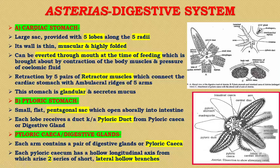The first part of the stomach is the cardiac stomach. It is a large sac — a large chamber provided with five lobes along the five radii. The wall is thin, muscular, and highly folded.